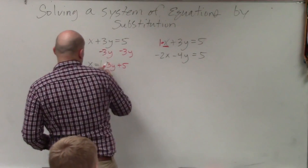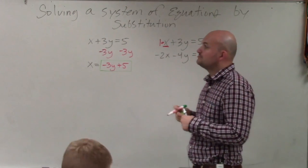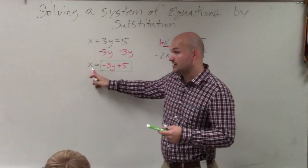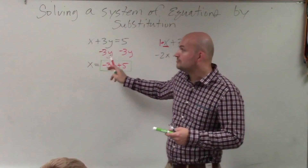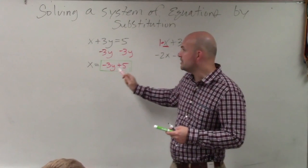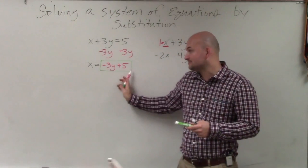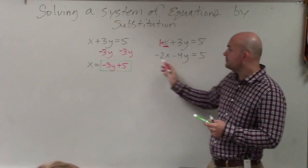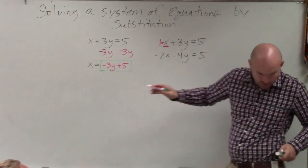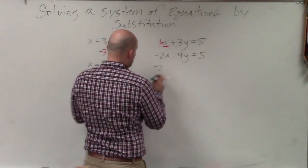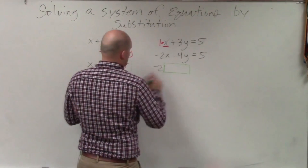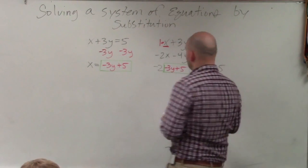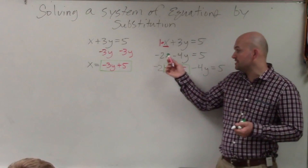When I'm talking about the quantity that the variable is equal to — step three says plug in the quantity that the variable is equal to into the other equation for the same variable. So x is equal to this quantity — I'm going to plug in this quantity in for x into the other equation. I am going to replace my variable x with my new quantity: negative 2 times negative 3y plus 5, minus 4y equals 5.